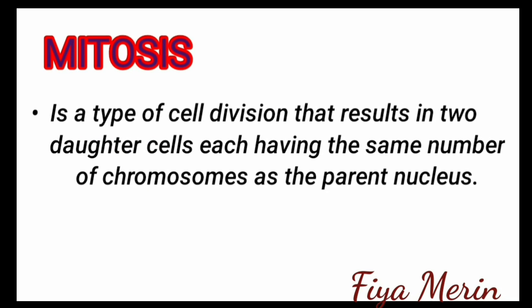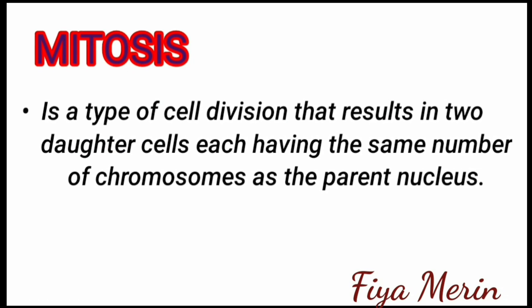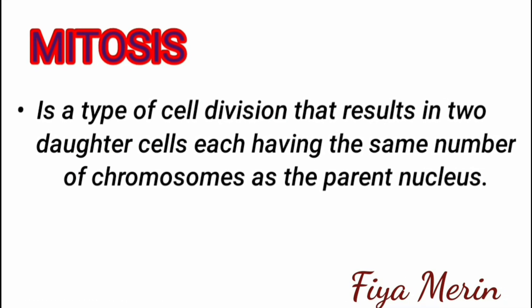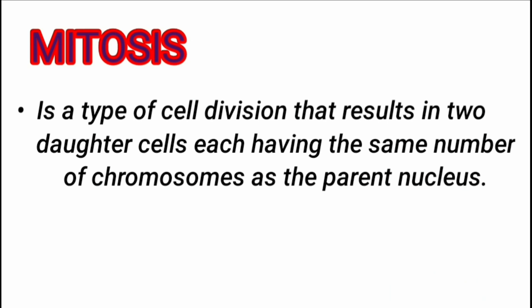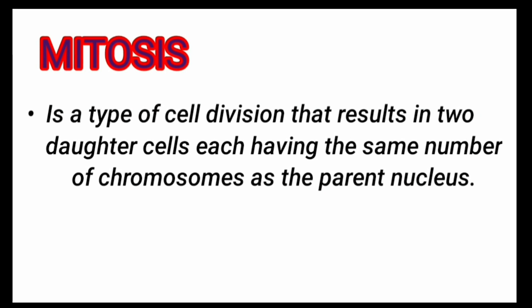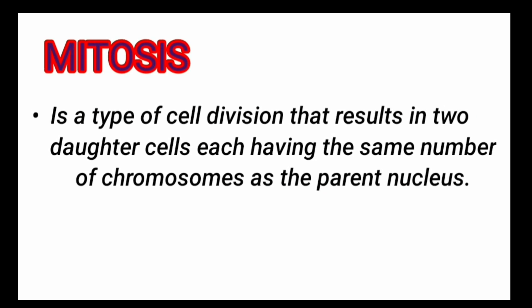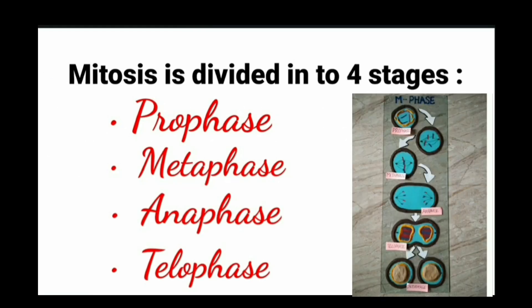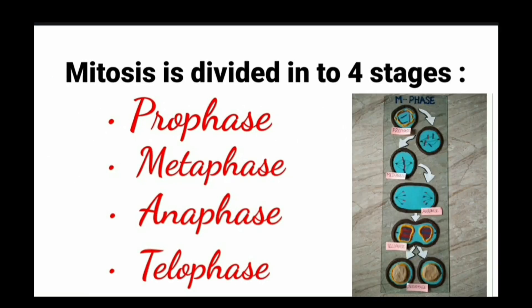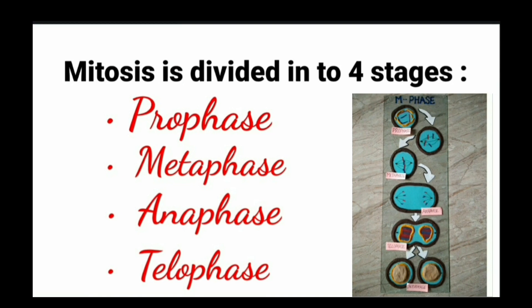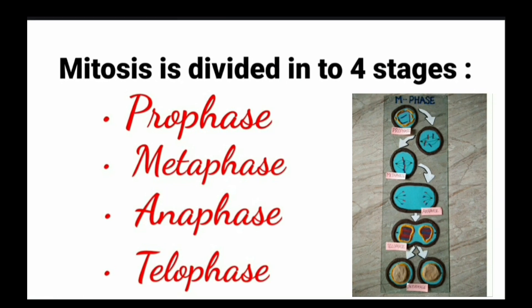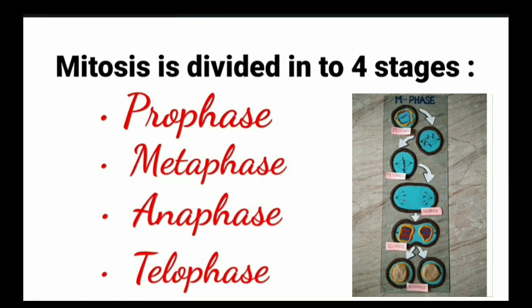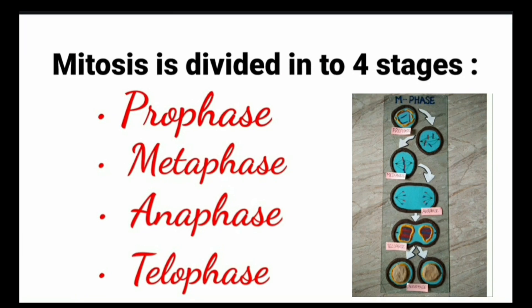Cell division is a very important process in all living organisms and this is marked by M phase, or mitotic phase. Mitosis is a type of cell division that results in two daughter cells, each having the same number and same kind of chromosomes as the parent nucleus. The very significant contribution of mitosis is cell repair and growth of multicellular organisms.